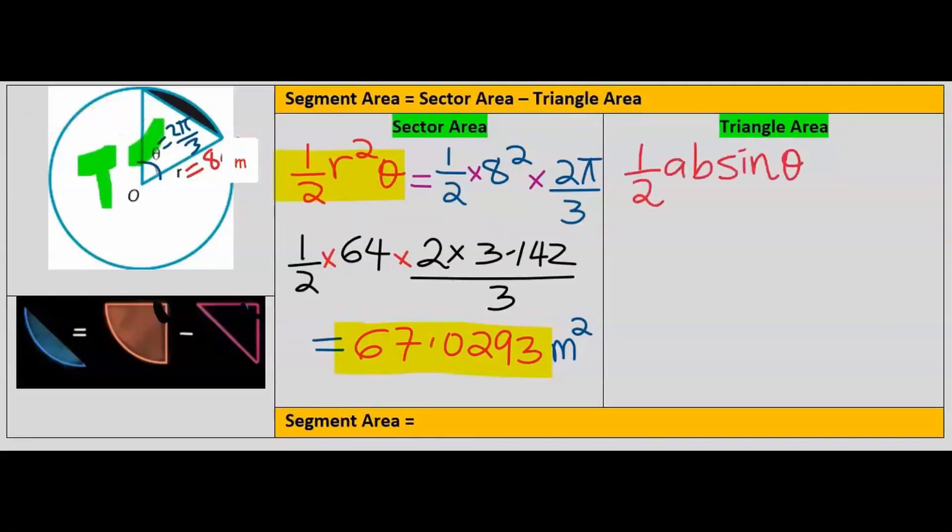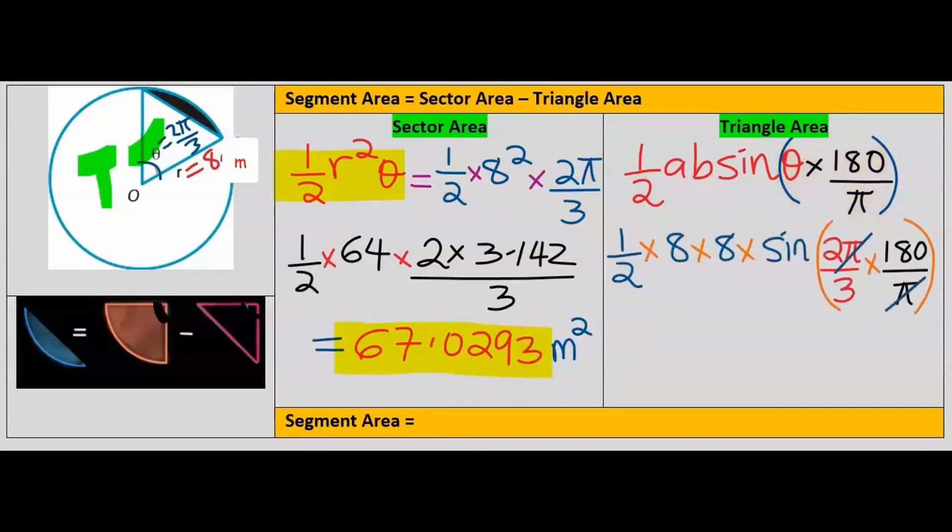Next, let's find the area of this triangle. The formula is half multiplied by the two given sides multiplied by sine θ. This theta for the triangle is usually in degrees. To be able to subtract from radians, we're going to multiply this by 180 divided by π. Next, π/3 here is 1, and 3 here is 60. When you simplify further, your answer for the area of the triangle is 27.7128 meters squared.